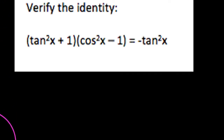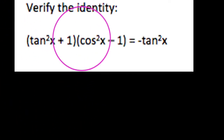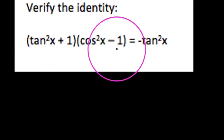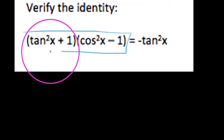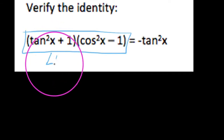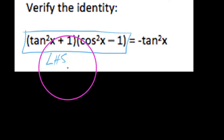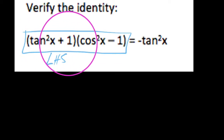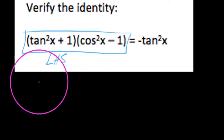Moving right along, let's take a look at this identity on the right, which doesn't necessarily involve adding or subtracting fractions. What we want to do is prove that the left-hand side is actually equal to the right-hand side. We're going to work with the left-hand side because it is the more complicated of the two sides. I guess we could start by looking at whether we have a tangent squared plus 1 and a cosine squared minus 1, and consider what substitutions we could probably do.